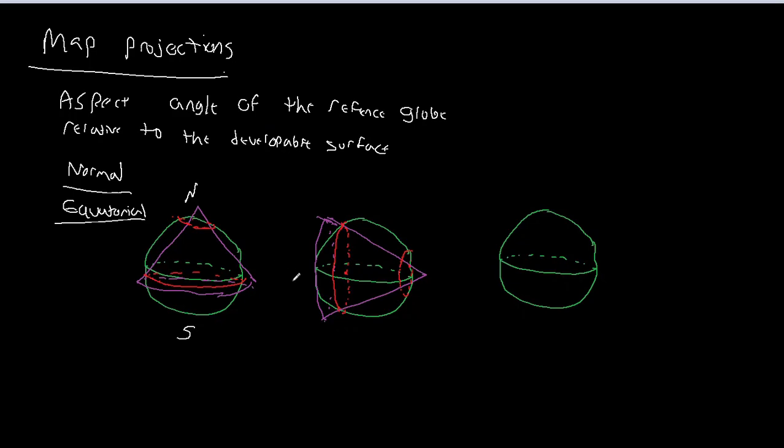And so in this case, when the standard lines are now running along meridians instead of parallels, running along meridians, we call this the transverse aspect.